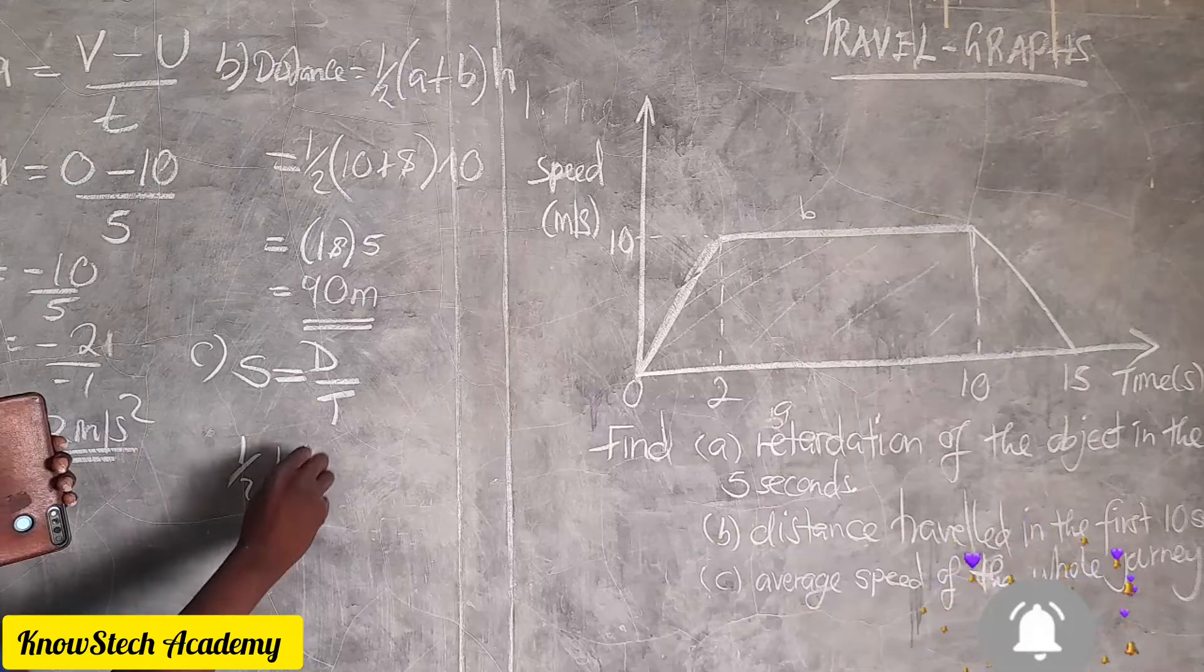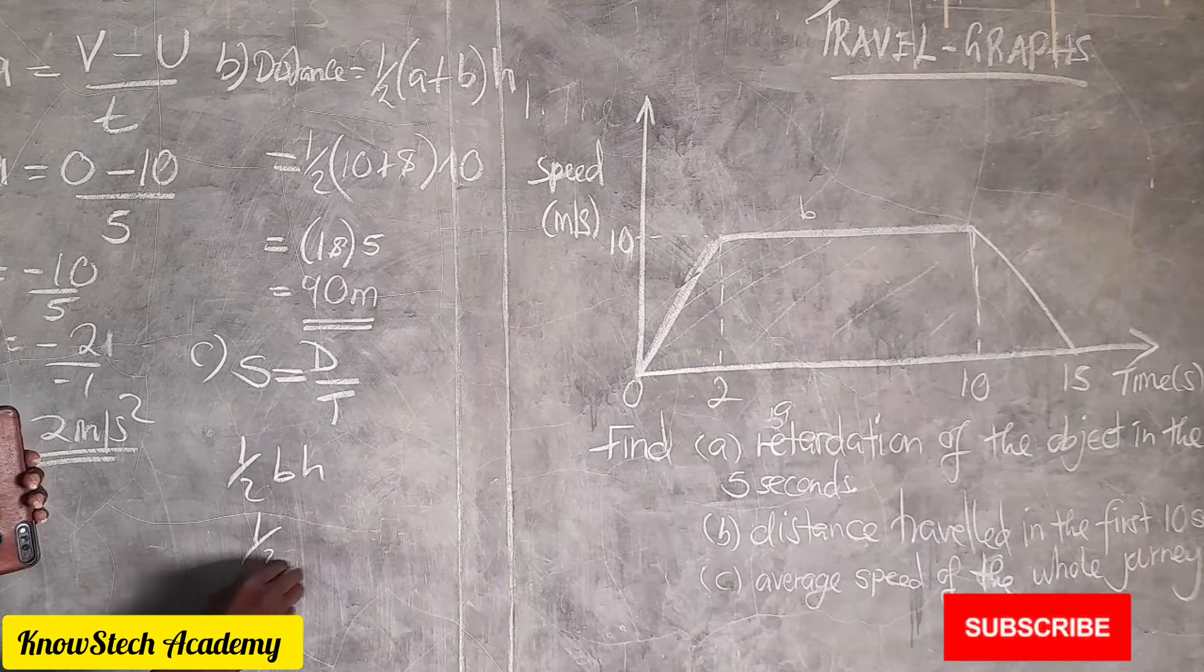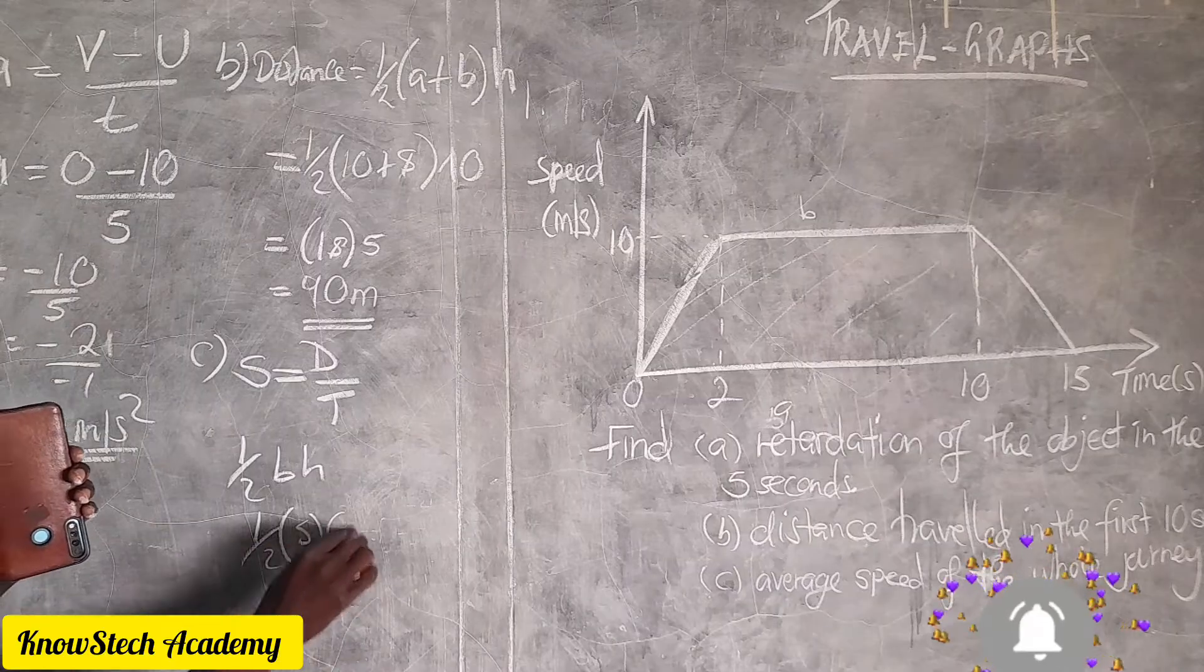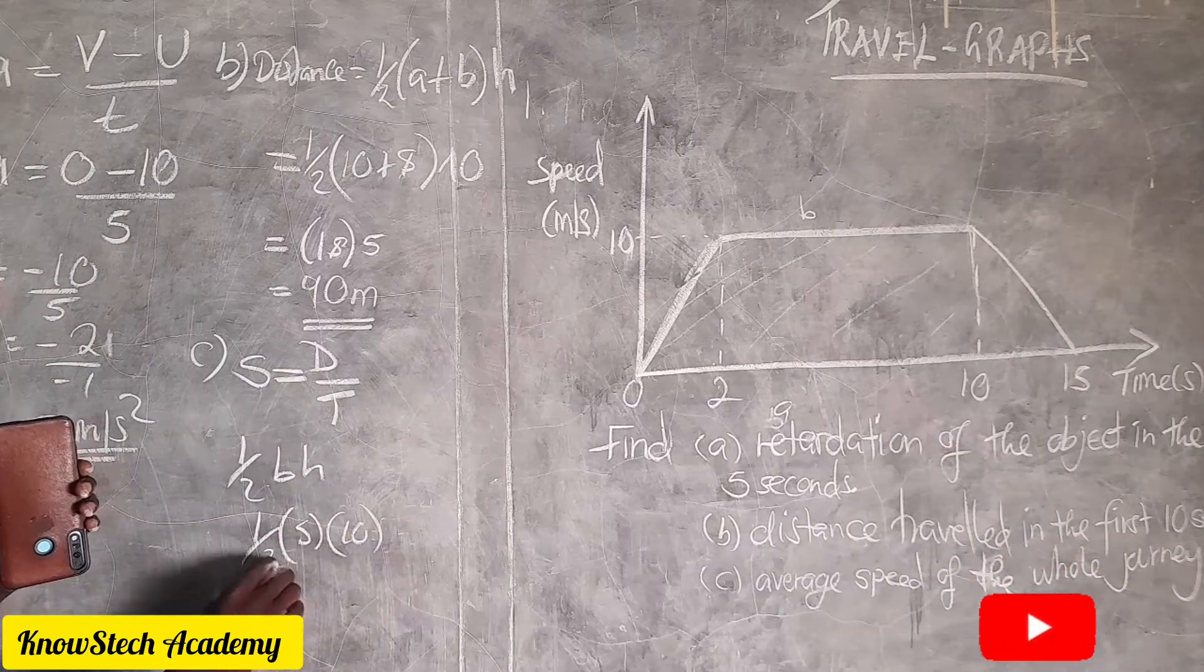So let's just find the distance of that triangle. It will be half b times h.